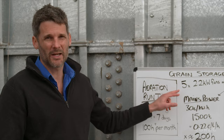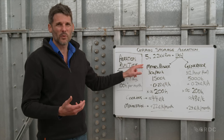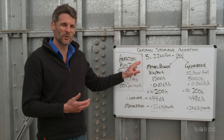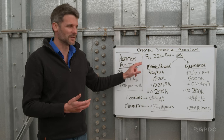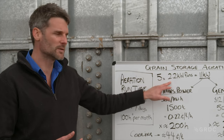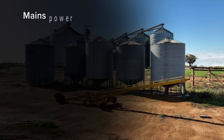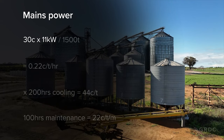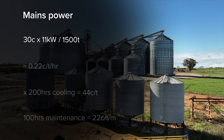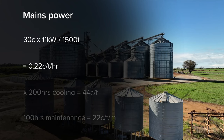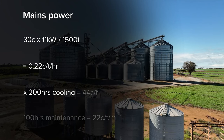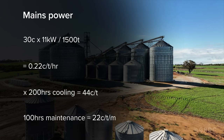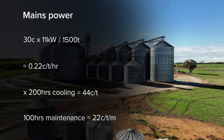What we've got here is an example of how to calculate the cost of running aeration cooling fans. The important thing is to use your own numbers of power cost for your own situation. We haven't considered the setup cost of a generator or mains power — that's something that's going to be site specific. In this example, we've got five fans of 2.2 kilowatts totaling 11 kilowatts. Using a mains power cost of 30 cents per kilowatt hour, multiplied by 11 kilowatts, divided by 1500 tonne in that silo, we've got about 0.22 cents per tonne per hour. Multiply that by 200 hours to cool the grain down, and our cost is about 44 cents a tonne. For every month after that for maintenance, we're looking at about 22 cents per tonne.